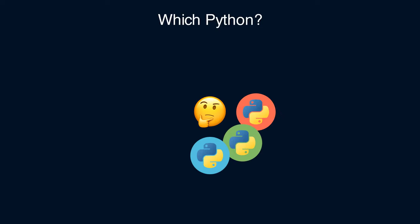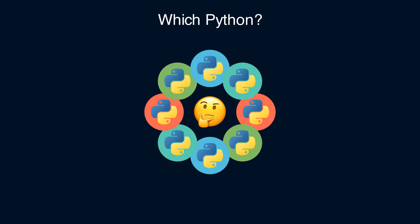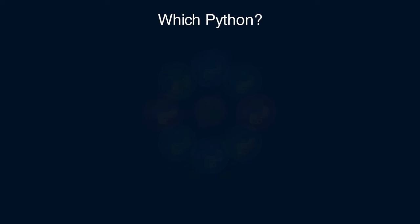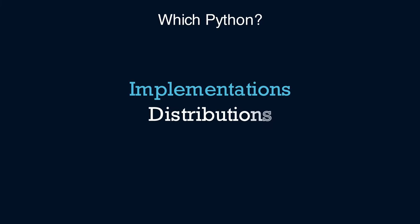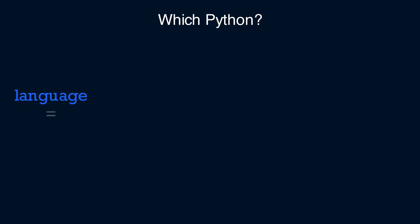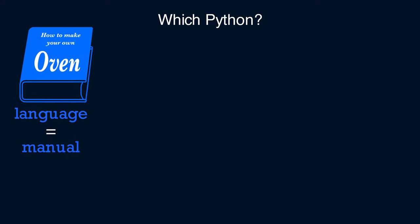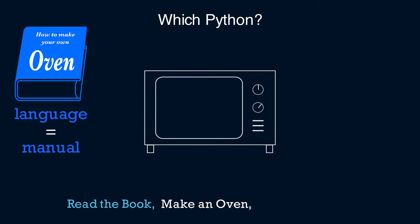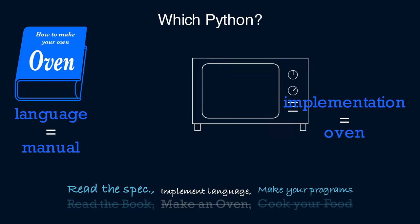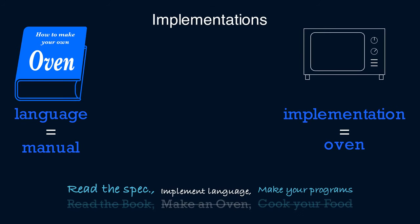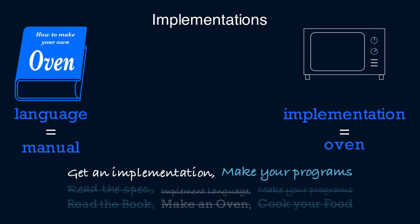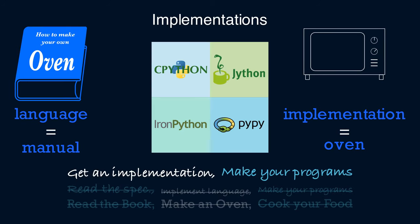Are there many Pythons to choose from? If you've heard these terms regarding Python, you may have already asked that question yourself. What do these terms mean? A programming language is like an instruction manual — a specification of what to do and how to do it. Then someone needs to implement that specification. Being an open source programming language, different implementations of Python are available.